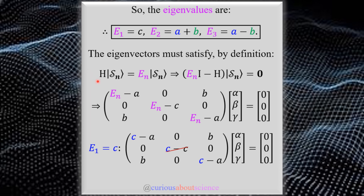Going back to the eigen-equation, H acting on state |n⟩ equals E_n|n⟩, we need to match each E_n with its state vector s_n. We let the state vector s_n equal (α, β, γ) set equal to the zero vector — same matrix setup as the determinant but now we solve a system of equations. For E₁ = c, plugging in c makes (c-c) = 0, giving a whole row of zeros, and we get (c-a) on the diagonal — we must handle the symmetric structure carefully.